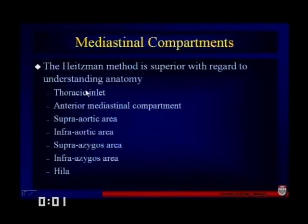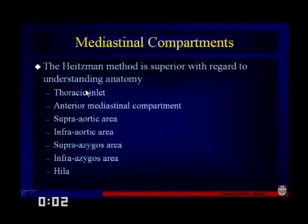The Heitzman method is good for understanding anatomy from a surgical approach because it discusses things in terms of the thoracic inlet level, an anterior compartment, a supra- and infra-aortic area, and then on the right side, a supra- and infra-azygous region, and of course the hyla.